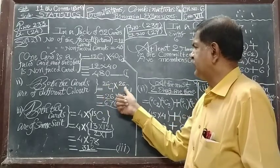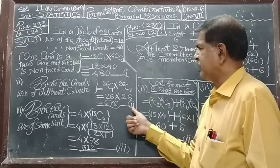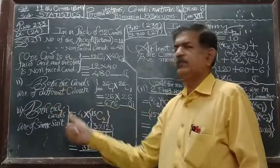Now 26C1 into 26C1, answer will be 676. Call this as result or answer number 2, that both the cards are of different color.